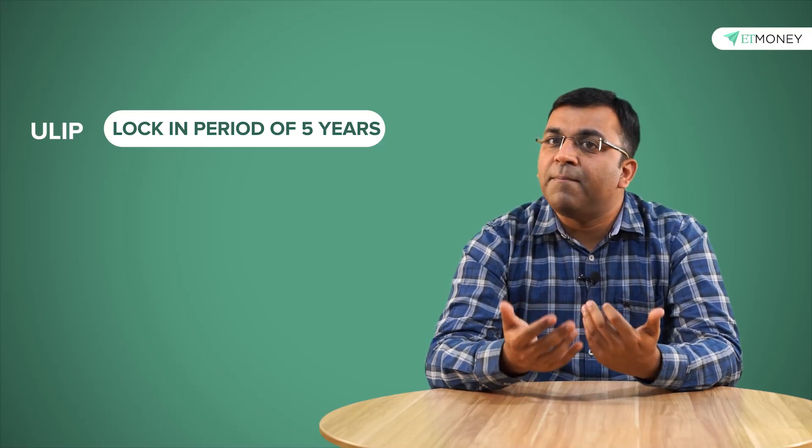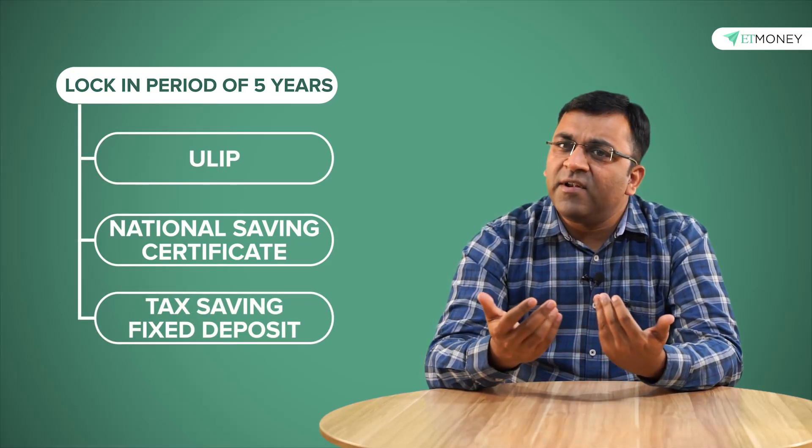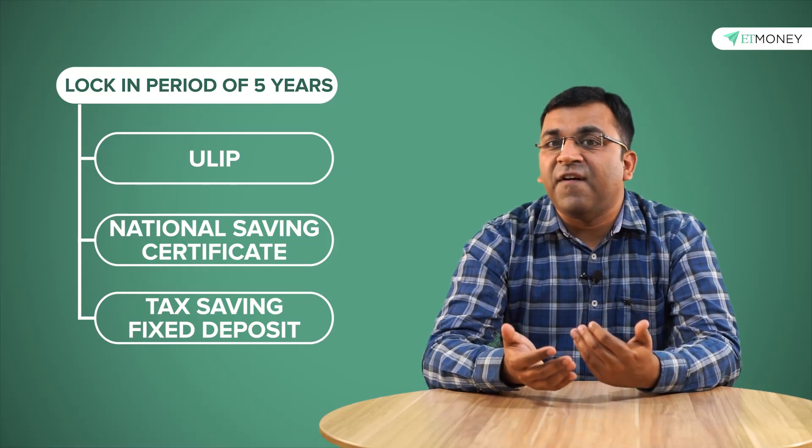ULIPs have a lock-in period of five years which from a comparison perspective is similar to that of a national savings certificate or a tax saving fixed deposit. However, when compared to mutual funds, five years is a pretty long time.